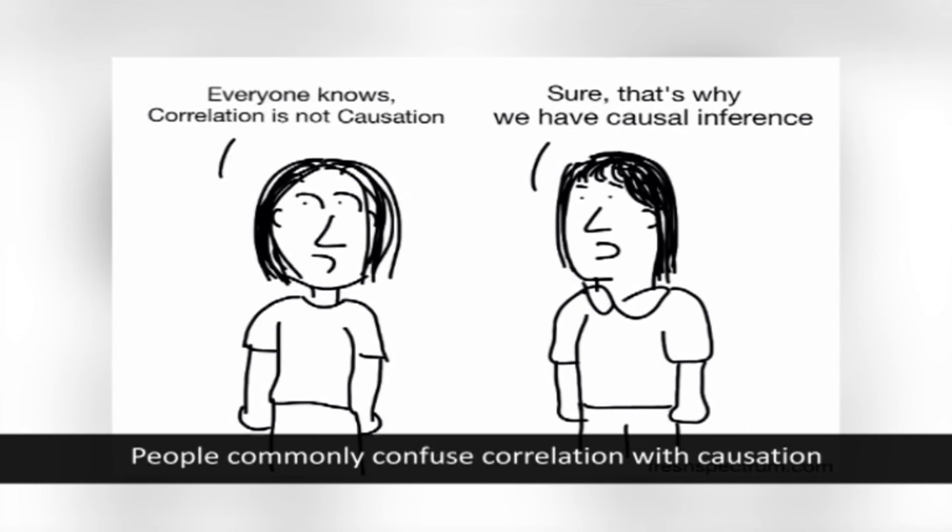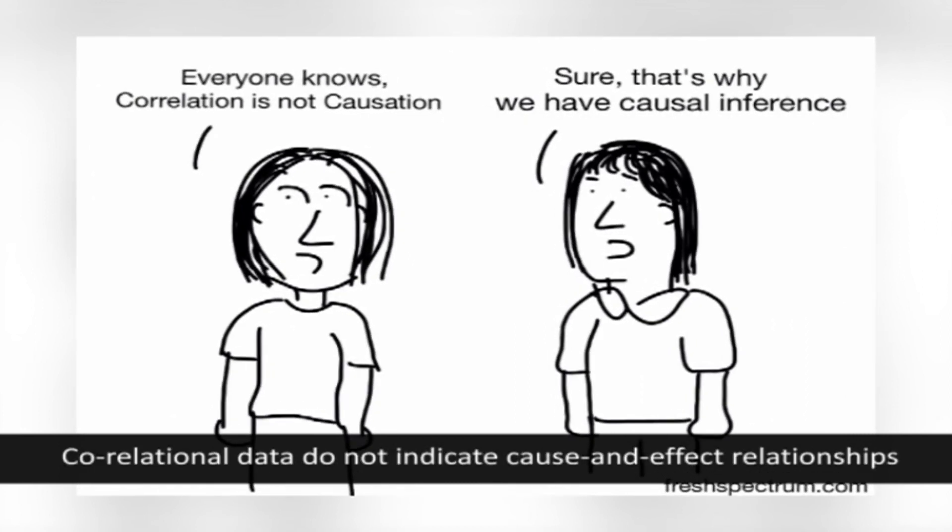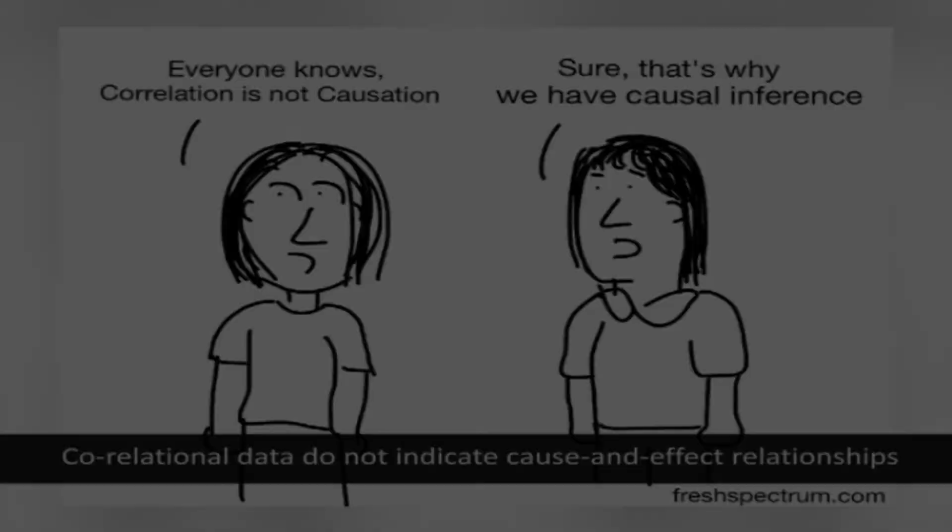People commonly confuse correlation with causation. Correlational data do not indicate cause and effect relationships. When a correlation exists, changes in the value of one variable reflect changes in the value of the other. The correlation does not imply that one variable causes the other, only that both variables somehow relate to one another.